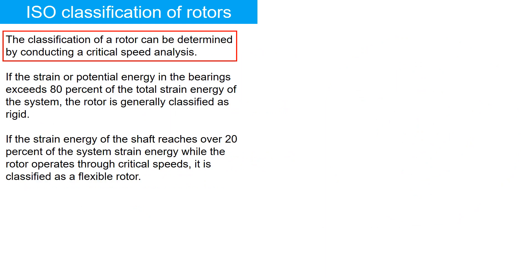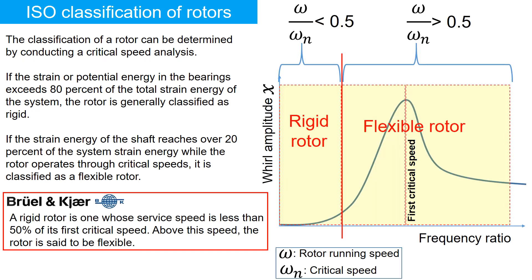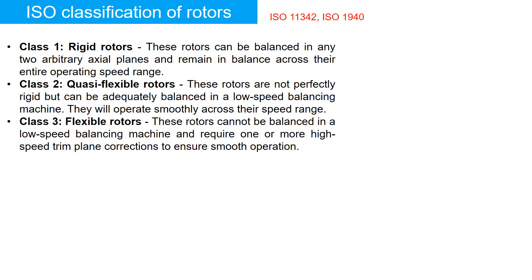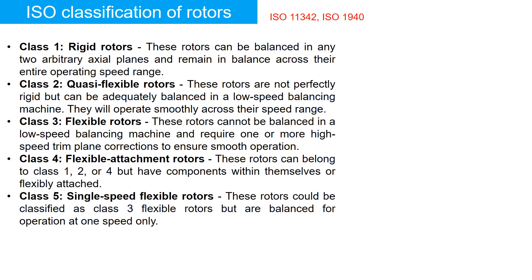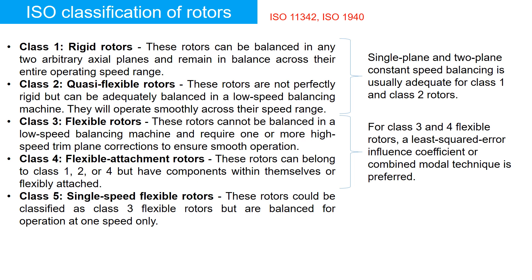The classification of a rotor can be determined by conducting a critical speed analysis. BNK simply defines that a rigid rotor is one whose service speed is less than 50% of its first critical speed. Above this speed, the rotor is considered flexible. In ISO spec, you can classify the rotor into five classes, and depending on the classification, the balancing approach differs.